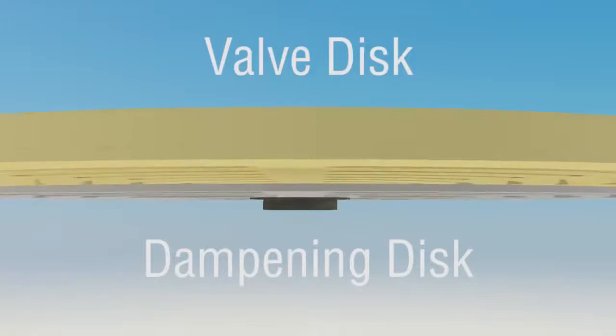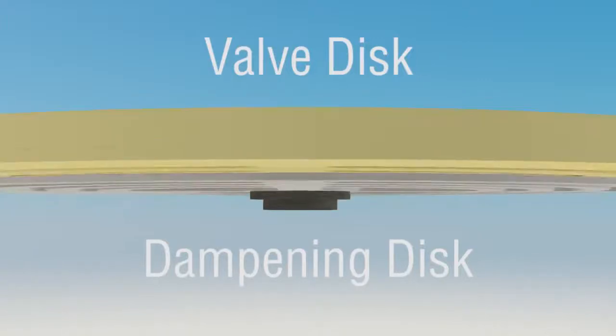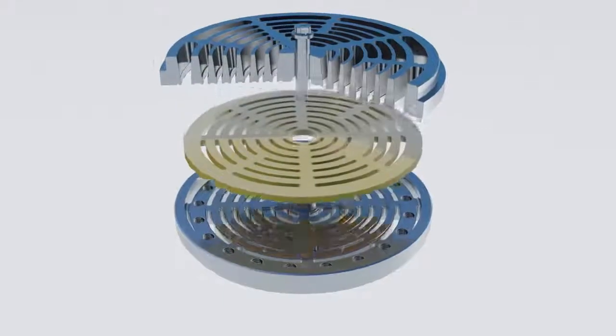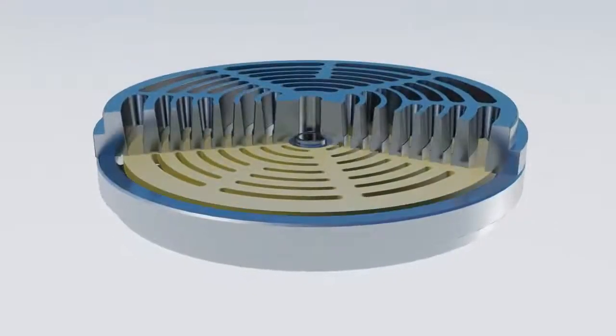When the valve opens, both discs accelerate rapidly but the brunt of the impact is absorbed by the hardened secondary disc. The secondary disc also dampens out any possible flutter the primary disc would exhibit due to high speed or high differential pressure bounce.